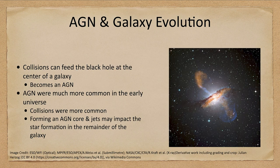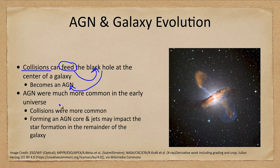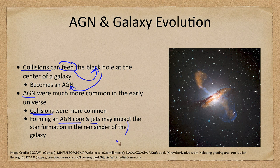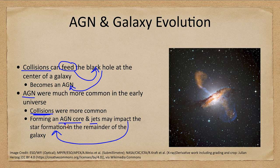Looking at active galaxies and how that ties in: collisions can feed the black hole at the center of a galaxy, making it become an AGN — an active galactic nucleus. These AGNs were much more common in the early universe because collisions were more common. Forming an active galactic nucleus core and its jets may impact star formation in the remainder of the galaxy, affecting what happens with the galaxy in the long run. Here we see one example of a collision with jets of material coming out from the central core.